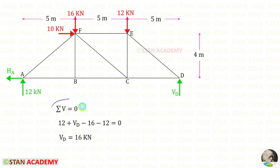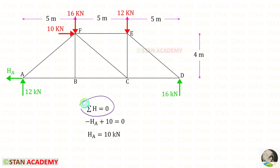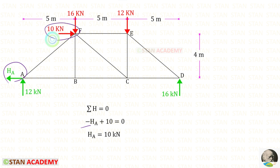Let us apply this rule and find VED. VA and VED are acting upwards, so both of them are positive. These two loads are acting downwards, so both of them are negative. For VED we will get 16 kN. Using this rule, we can find HA. HA is acting towards the left side, so it will be negative. This load is acting towards the right side, so it will be positive. For HA we will get 10 kN.